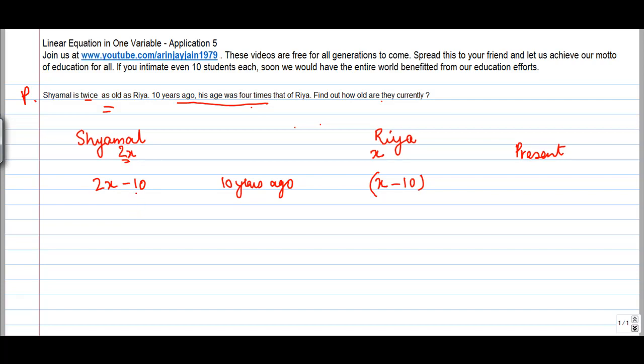But we also know that ten years ago his age, whose age? Shamal's age. What was Shamal's age ten years ago? 2X minus 10 was four times that of Rhea.